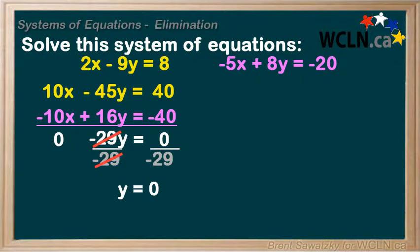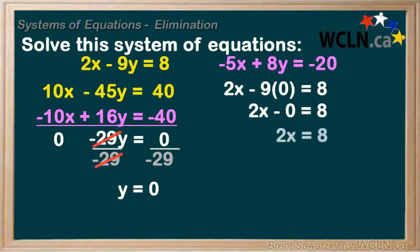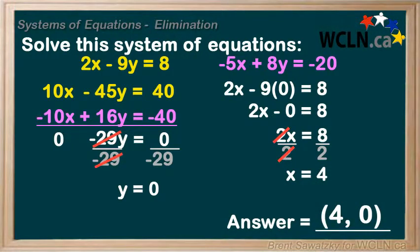But we're not done — we go back to find x. Plugging y equals 0 into the first equation is straightforward because 0 times 9 is 0. So we just divide by 2 and get x equals 4. Our full solution is (4, 0), or x equals 4 and y equals 0.